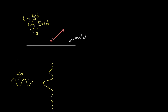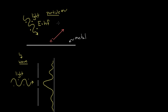So this experiment showed that light behaved like a wave, but the photoelectric effect showed that light behaved more like a particle, and this kept happening. You kept discovering different experiments that showed particle-like behavior, or different experiments that showed wave-like behavior for light. Finally, physicists resigned to the fact that light can seemingly have particle-like properties and wave-like properties depending on the experiment being conducted.